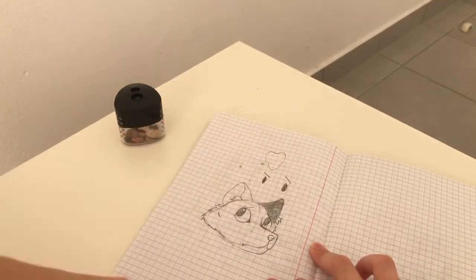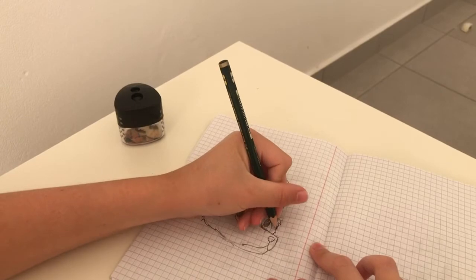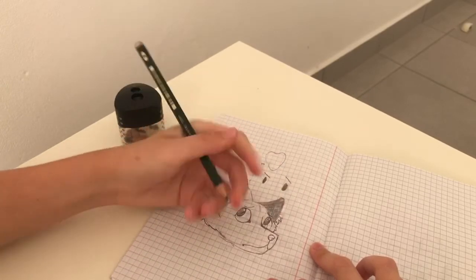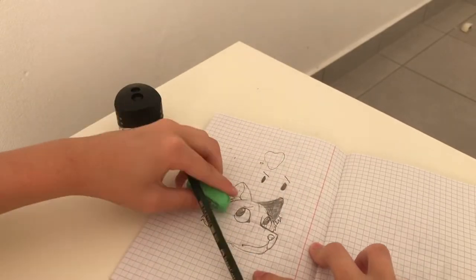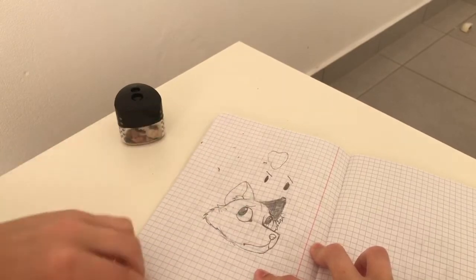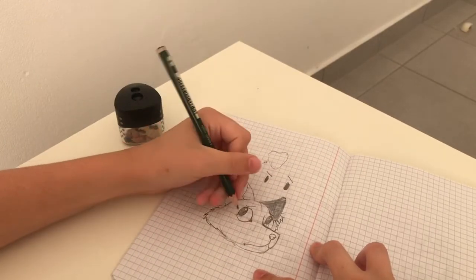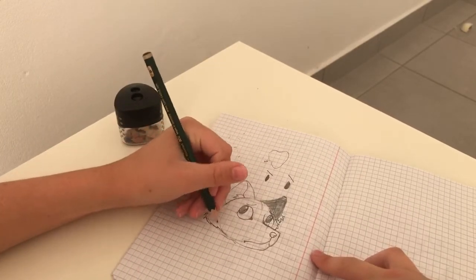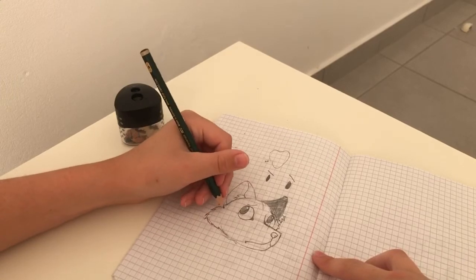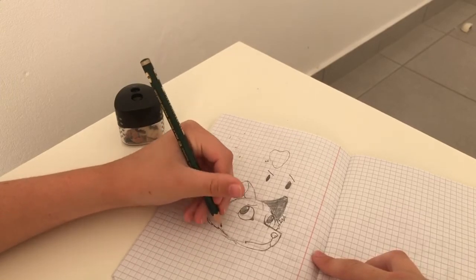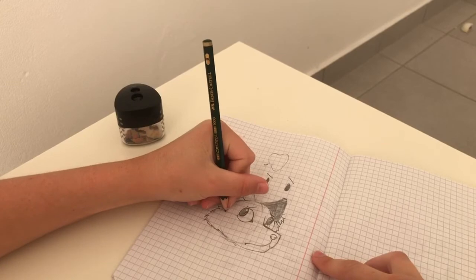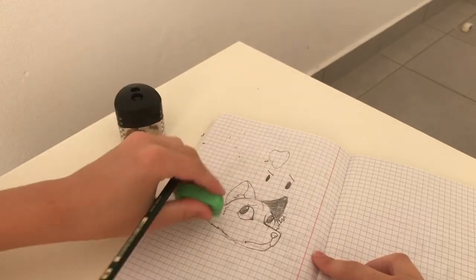So before I do that, I'm gonna erase that. Okay, so now I'm gonna do the cheek line, because this is all fluff, but we need to know where the jaw is. It's over here where the circle was, and we're just gonna do a bit of fluff right there. That's the cheek line.